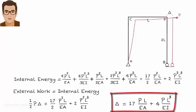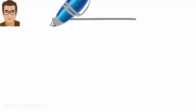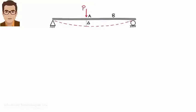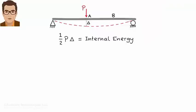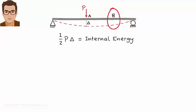This application of the work energy principle, however, has limited use. Here is a beam subjected to a concentrated load — the work energy equation can be used to calculate delta because delta appears in the expression for external work. If the displacement we seek does not appear in the external work expression, it cannot be calculated using the work energy equation. For example, the vertical displacement at B does not contribute to the external work, so it does not appear in the equation and therefore cannot be calculated this way.